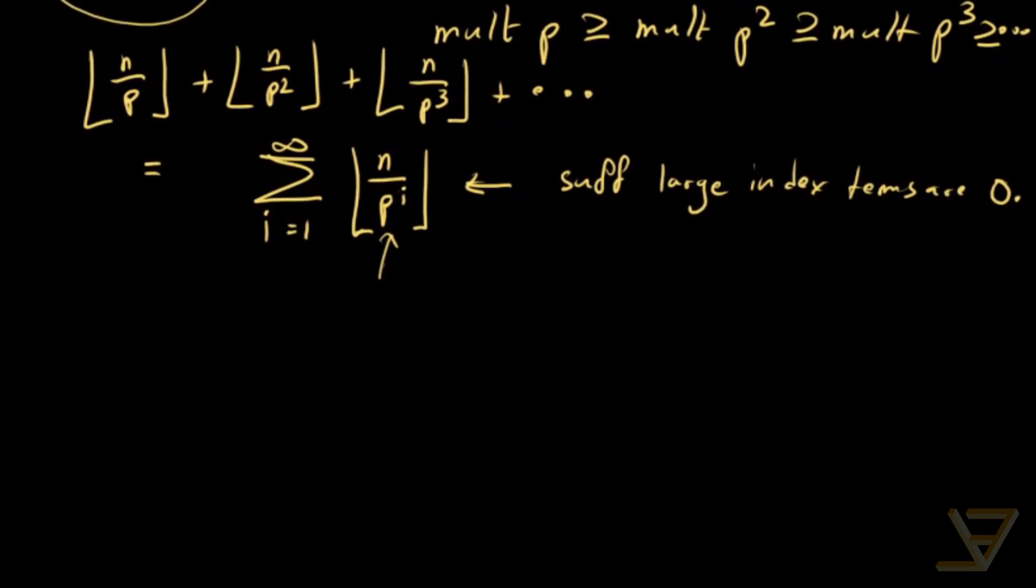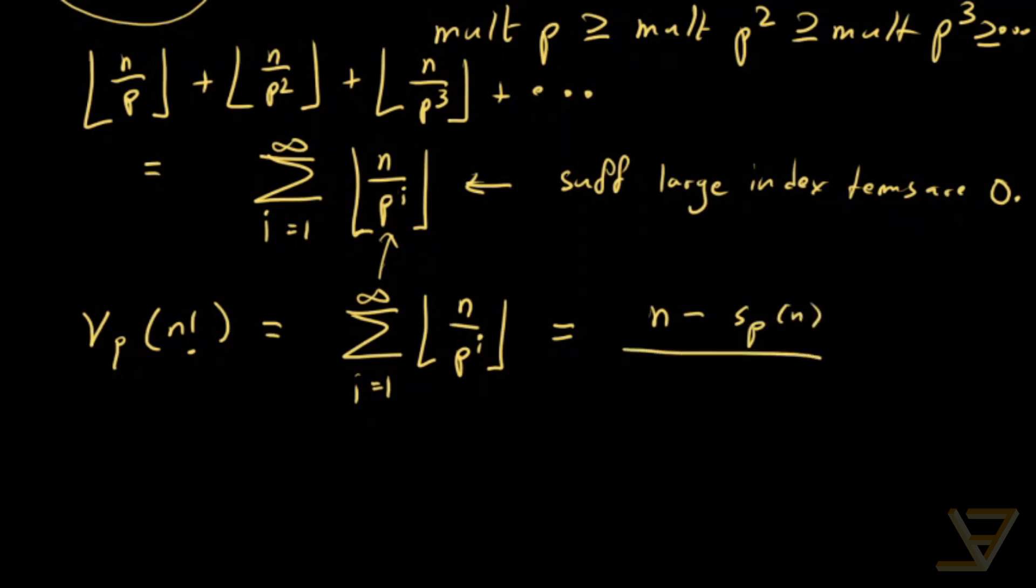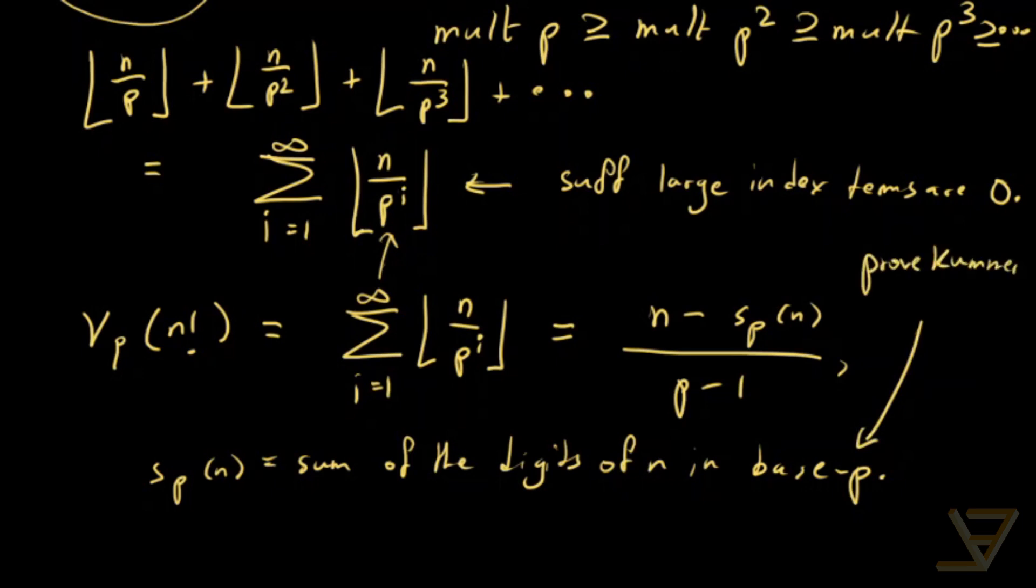The next thing that I want to show you is another form of Legendre's formula. So far we know that nu p of n factorial is equal to the sum of i equals to 1 to infinity floor function n over p to the i. The second form states that this is equal to n minus sp of n divided by p minus 1. Where sp of n is equal to the sum of the digits of n in base p. And I just want to say that this is not a random formula that's just there for no reason. You can actually use this to prove something called Coomer's theorem.